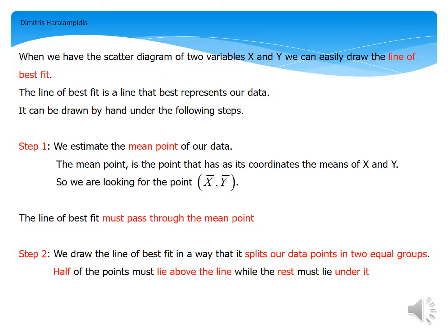Have in mind that the line of best fit must pass through the mean point. In second step, we draw the line of best fit in a way that it splits our data points in two equal size groups. And by that, we mean that half of the points must lie above the line while the rest of them must lie under it.